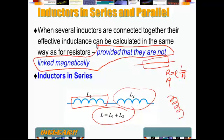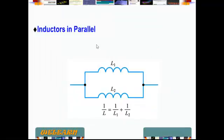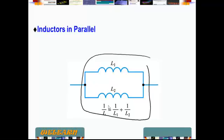In parallel, of course, we use the same idea that we used for resistors. So one over the equivalent L is one over L1 plus one over L2.